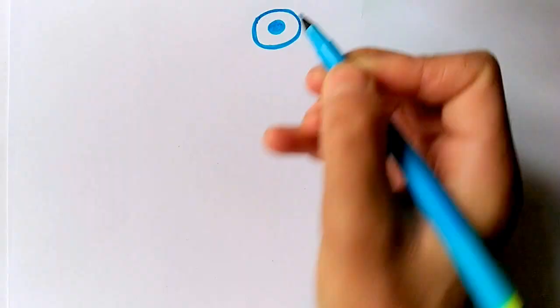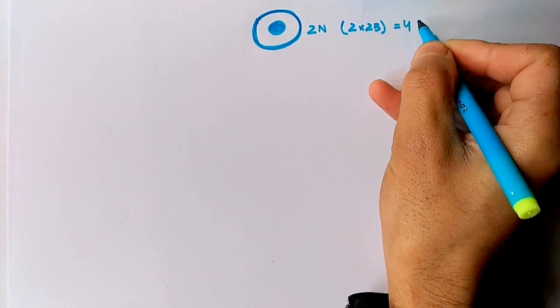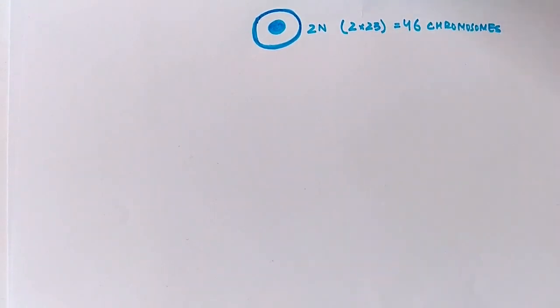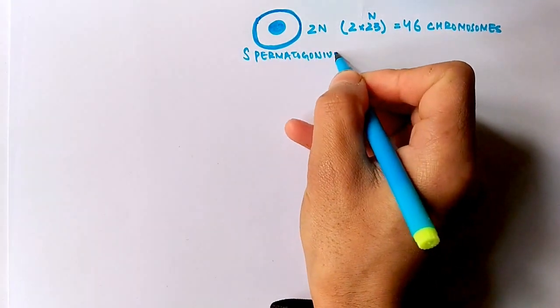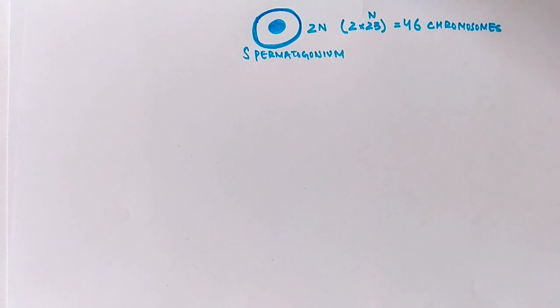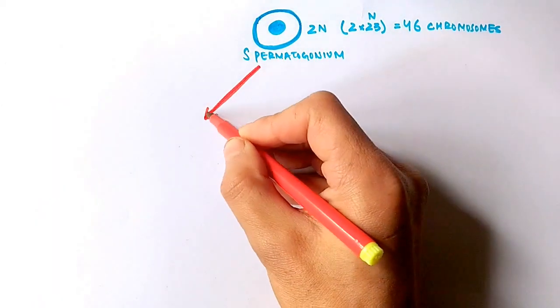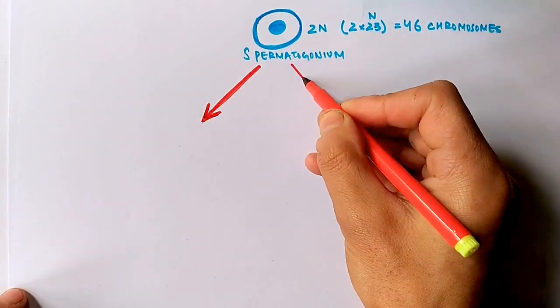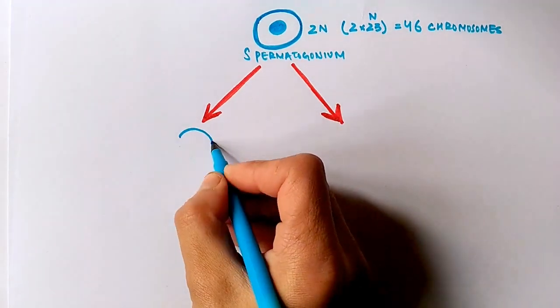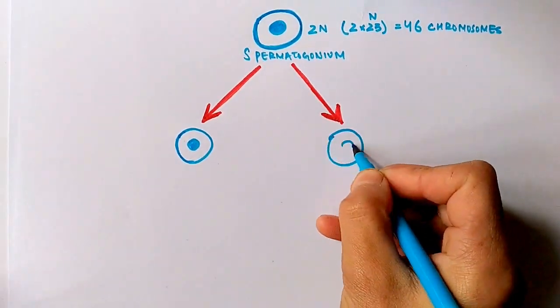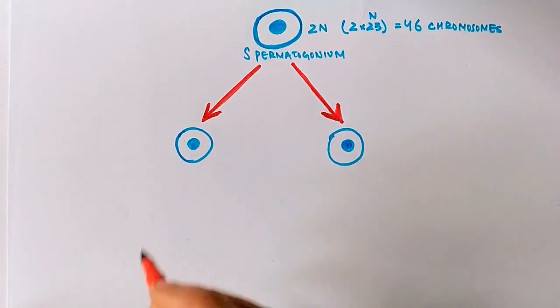In humans, the undifferentiated spermatogonium has 2n chromosomes — that is, 46 chromosomes: 23 from the mother and 23 from the father. This undifferentiated spermatogonium, with its 46 chromosomes, divides mitotically into Ad-type and Ap-type spermatogonium.